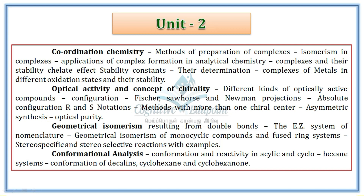Unit 2 covers: first part is Coordination Chemistry — Isomerism and Stability; second part is Stereochemistry — Optical Activity and Chirality, Geometrical Isomerism, and Conformational Analysis. In many TRBs, there are some conformational analysis and reactivity questions, but in the TRBs the questions are very simple.